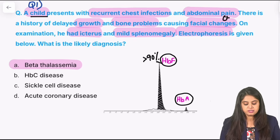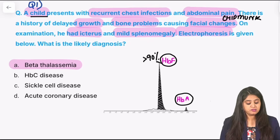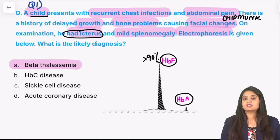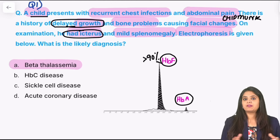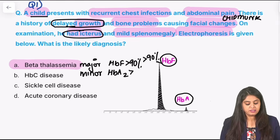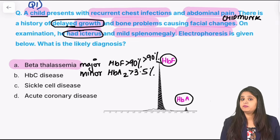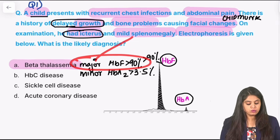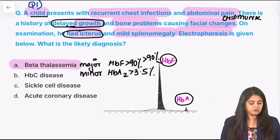For beta thalassemia major, the facial changes are the classical chipmunk facies. Because it's a hemolytic anemia, the patient has jaundice, and thalassemia causes delayed growth — everything falls into place. For beta thalassemia major, fetal hemoglobin should be more than 90 percent. For beta thalassemia minor, Hb A2 levels have to be more than 3.5 percent. Thal minor is usually asymptomatic, whereas major shows all these clinical manifestations.